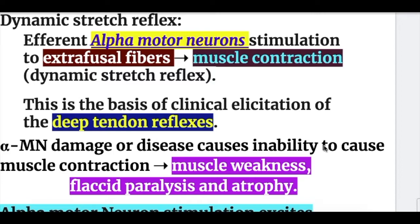Alpha motor neuron damage causes inability to produce muscle contraction, leading to muscle weakness, flaccid paralysis, and atrophy.